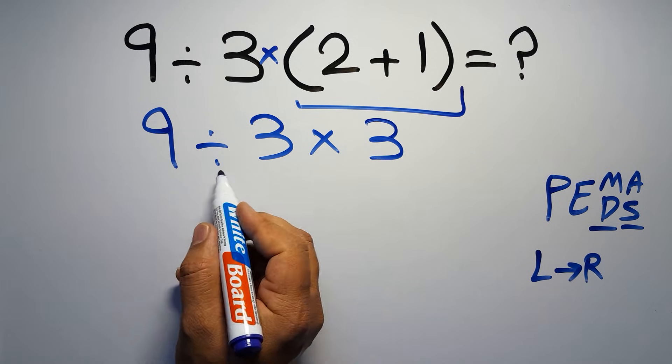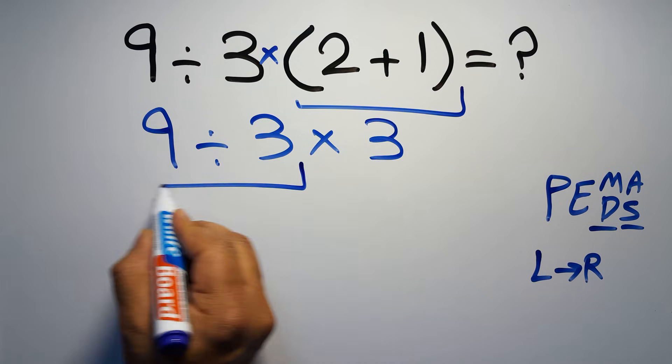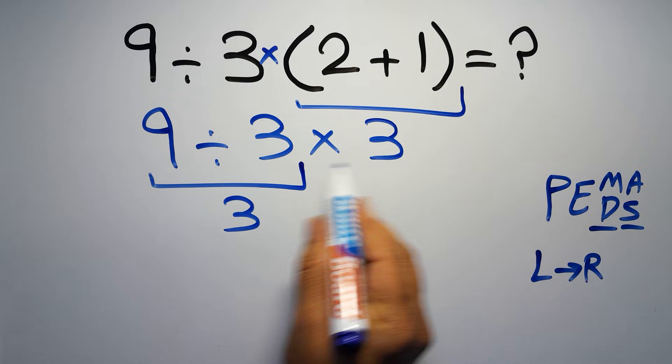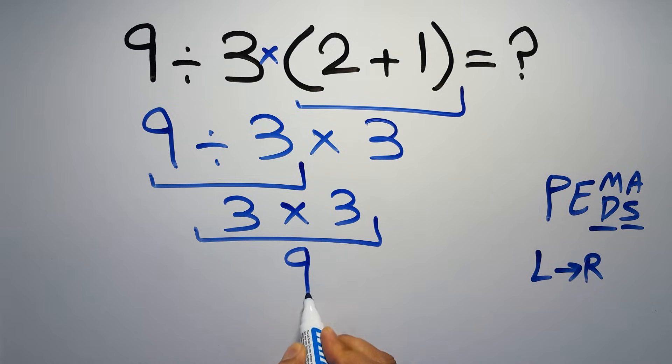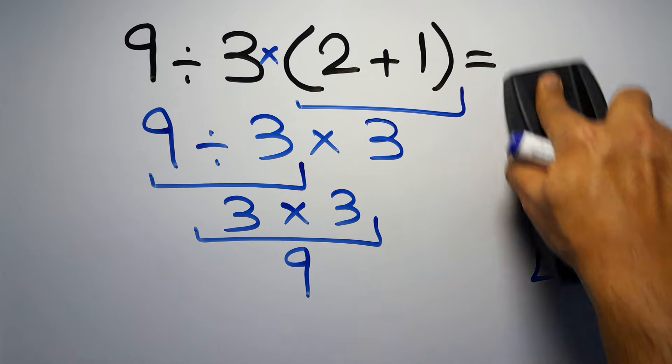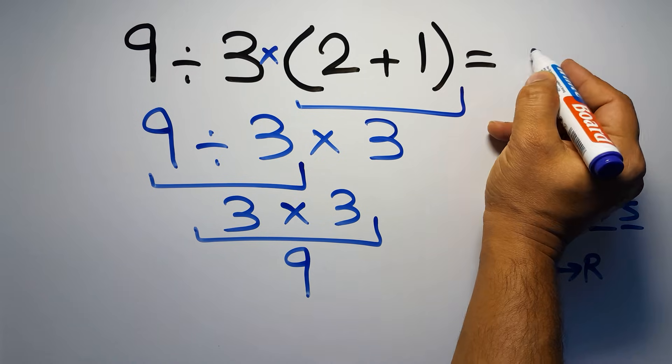So here, first we have to do this division. 9 divided by 3 gives us 3, and 3 times 3 equals 9. And this is our final answer to this problem. The correct answer is 9.